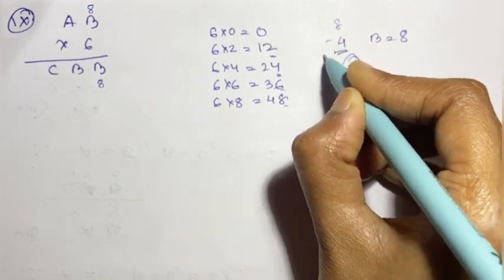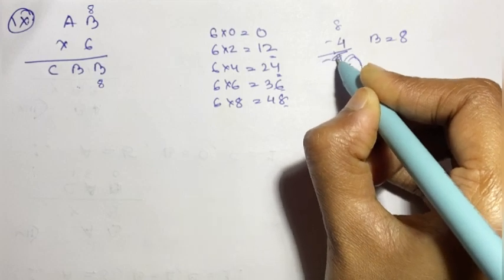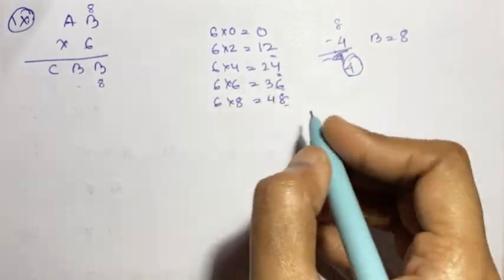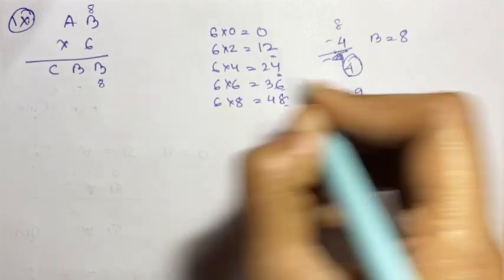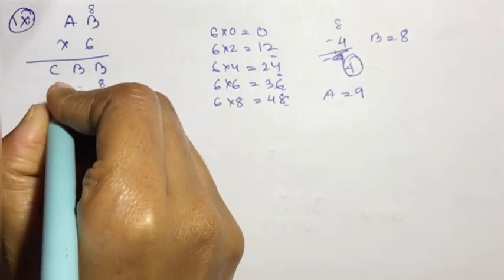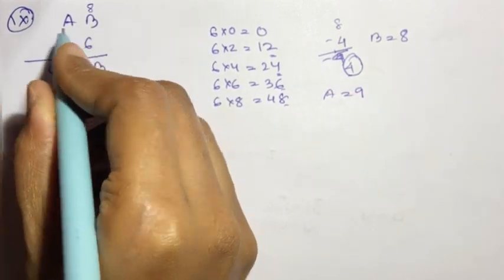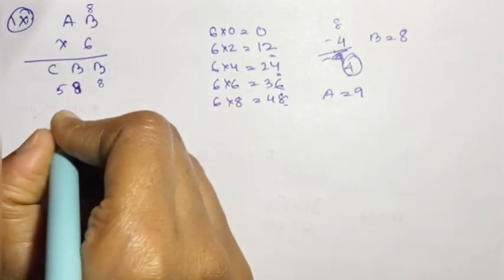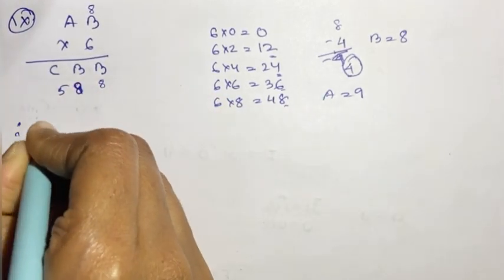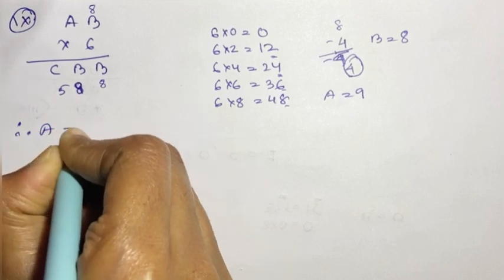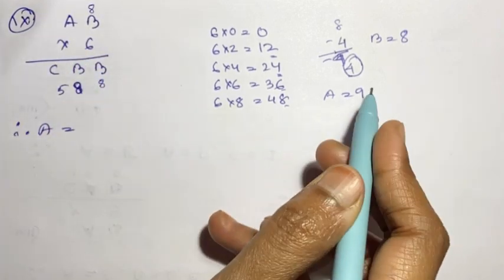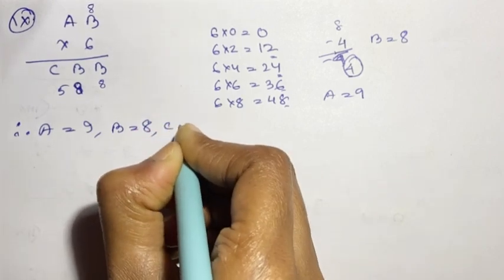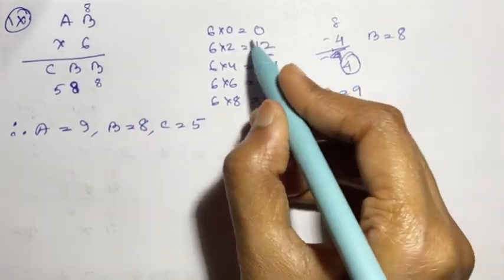So 4 minus 3 is equal to 9, and 7 plus 4 minus 8 is equal to 9, and 7 plus 8 is equal to 9.